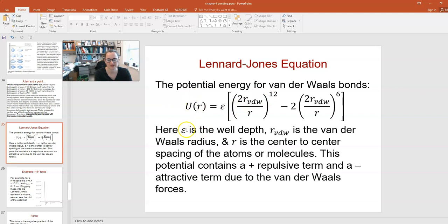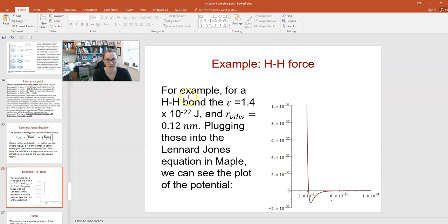Epsilon is the well depth. The van der Waals radius is also known as the hard sphere radius sometimes. R is the center to center spacing of atoms or molecules. For example, in this plot, this is for a hydrogen-hydrogen bond. Epsilon, the well depth, is 1.4 times 10 to the minus 22 joules. Remember that on the order of 10 to the minus 19 joules is about an electron volt. Minus 13.6 electron volts is how tightly the electron is bound to a hydrogen atom. A lot of ionic bonds and covalent bonds are on the order of an eV or so. This is more like a milli-eV, so it's a lot smaller.